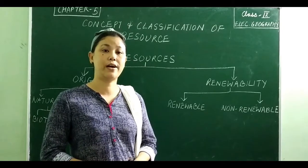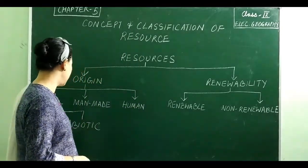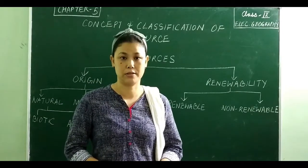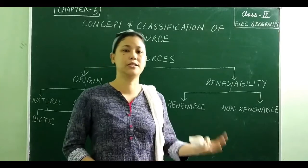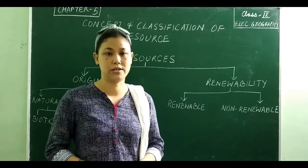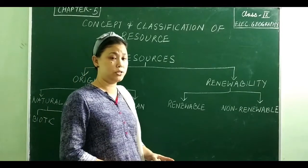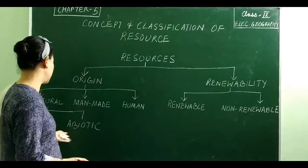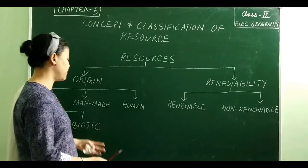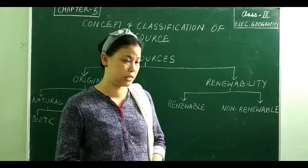Natural resources are divided into two kinds: biotic and abiotic. Biotic resources originate from life forms such as plants and animals. Abiotic resources, the opposite of biotic, do not originate from life forms — for example, solar energy, water, and wind. These resources from nature are utilized by man to meet various needs.